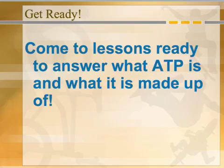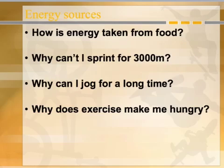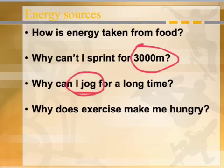I want you to come to the lesson ready to answer what ATP is, and maybe how it's made using ADP and the other phosphate. Also think about how this applies to the next question we'll be answering in the lesson: How do we take energy from the food? Why can't Usain Bolt sprint that fast for 3,000 metres? How come Paula Radcliffe can jog for a long time — what is it about her energy and ATP levels? And why does exercise make me hungry? Why do we need to put food back in the body? Thank you very much for listening — I look forward to hearing all about the circle of life in the lesson.